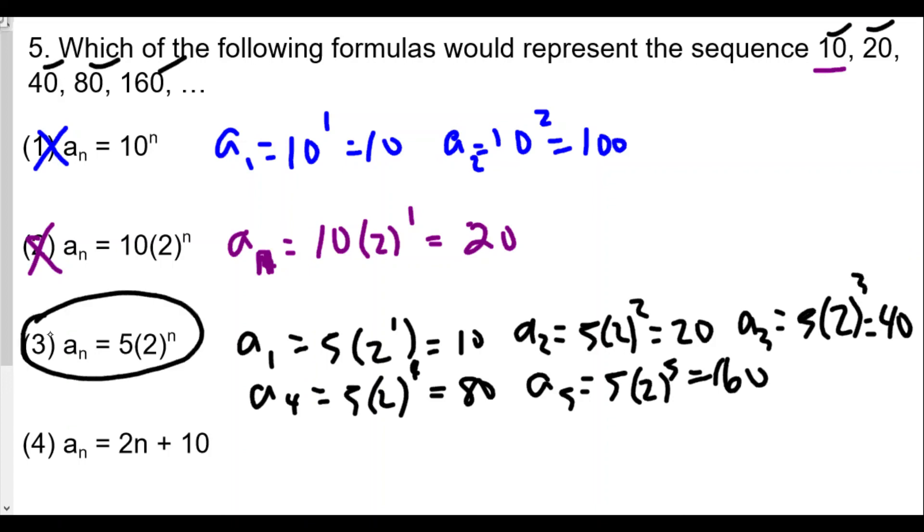It looks like choice C meets all the requirements here, so I believe 3 should be the answer. Just to test out and make sure that 4 is not correct, a1 is 2 times 1 plus 10, that's 12, so we already know that's no good. We see that we can basically try to plug in the values of 1, 2, 3, 4 like a function. These are all explicit definitions, very much like functions. We're plugging in the values and seeing what they match up in the sequence.